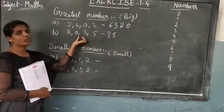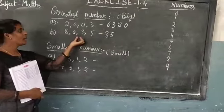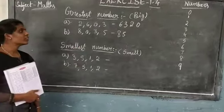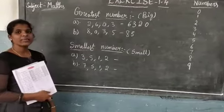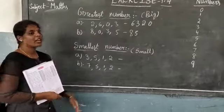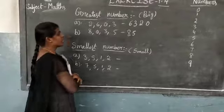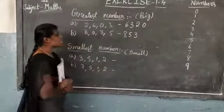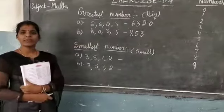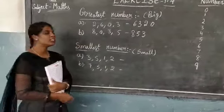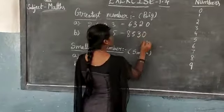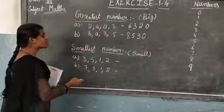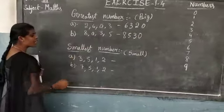Now, which 2 numbers is big — 0 or 3 is big? Which is the big, children? 3 is big. Then you write 3. Next, last — which number will come? 0 is there, then you put the 0.